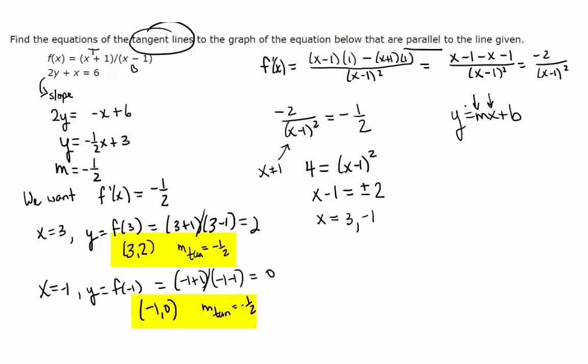We use these to get the equation plugging into y equals mx plus b. Let's start with the point 3, 2. So 2 equals negative 1 half times 3 plus b. We get b is equal to 7 halves. So we just found the equation of one tangent line. y equals negative 1 half x plus 7 halves.